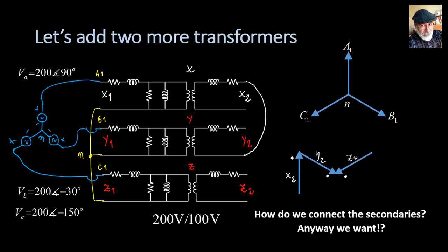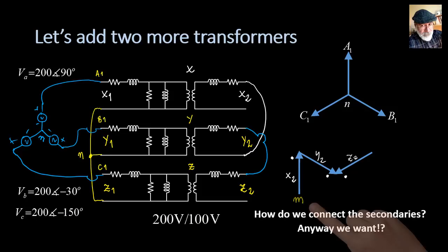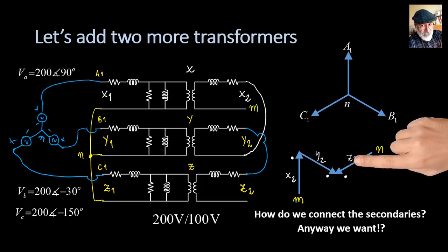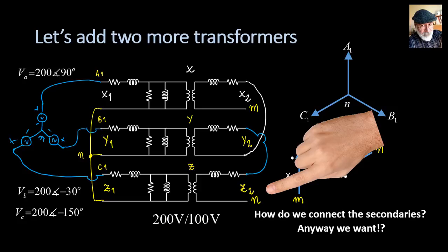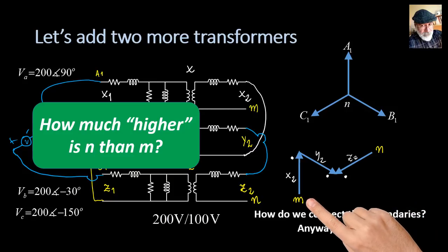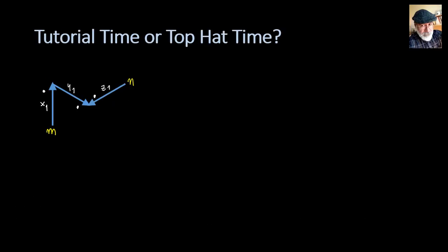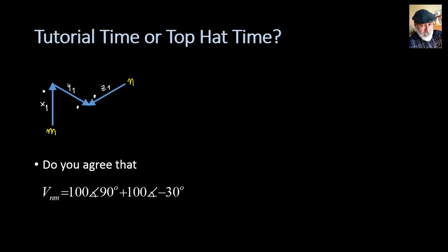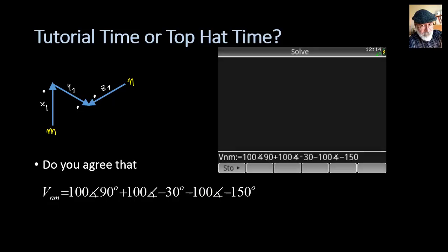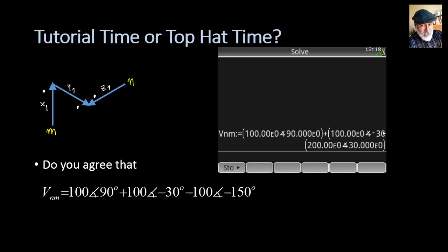That connection works like this: join the dot of X2 to the non-dot of Y2, and join the dot of Y2 to the dot of Z2. The remaining terminals will be M and N. What is the voltage of N with respect to M? The voltage from M to N would be: climb up 100 at 90 degrees (voltage in X1), plus 100 at negative 30 degrees (Y1), minus 100 at negative 150 degrees (Z1). Adding them up, the answer is 200 volts at 30 degrees.